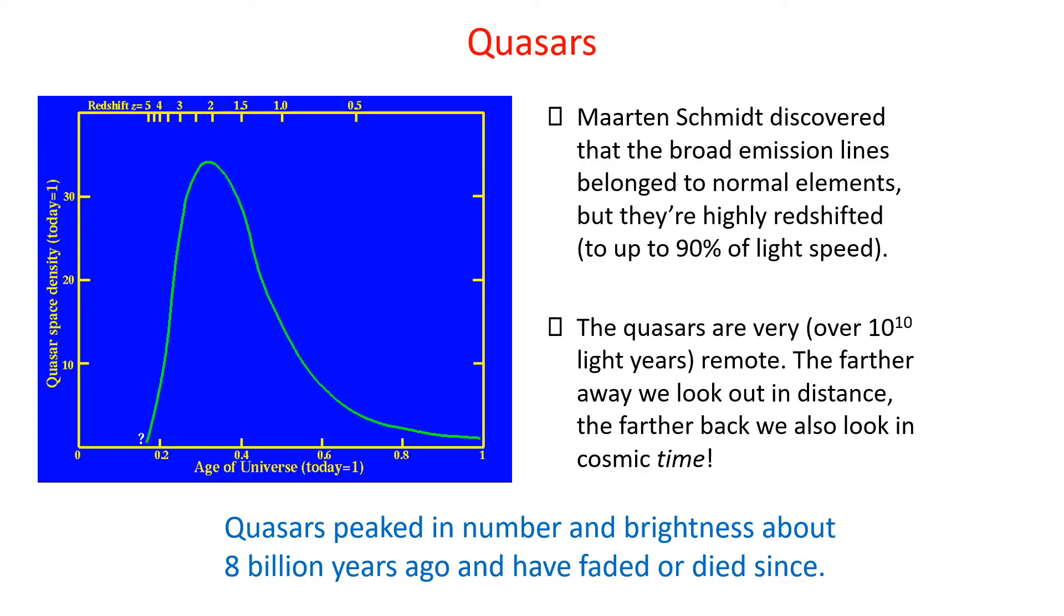And so they were shifted to wavelengths that made them completely unrecognizable as normal elements. But in fact, they were the lines of normal elements, like hydrogen, helium, carbon, and magnesium, just shifted to longer wavelengths into the near-infrared. That indicated the objects were very distant and extremely luminous.